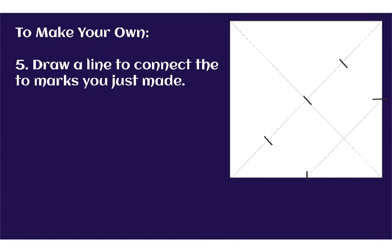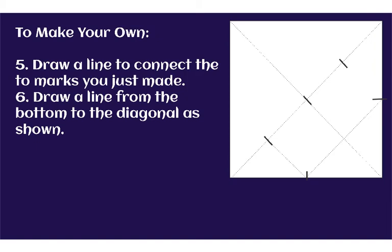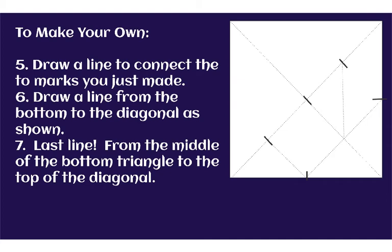Next, and this is tricky, we're going to draw a line to connect the two marks we just made, the ones on the bottom and the right. This line is parallel to the one in the middle. Now, we're going to draw a line from the bottom middle to the diagonal over here. Next, we're going to draw the trickiest one. This is the last line from the middle of this bottom triangle to the top of the diagonal. That's our last line.